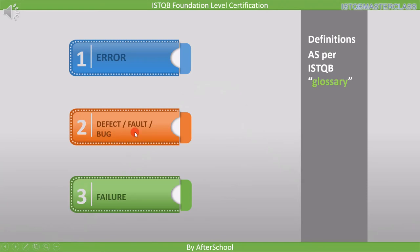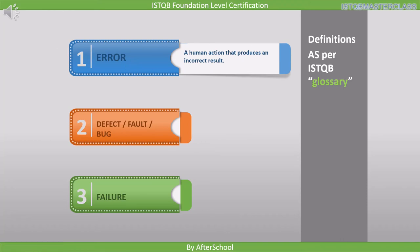Let's start with the definitions and afterwards I will provide you the detailed explanation. What is error? A human action that produces an incorrect result is called error. Let's relate this definition to software testing. If the developer finds a mistake in their own code, then it is referred to as an error.